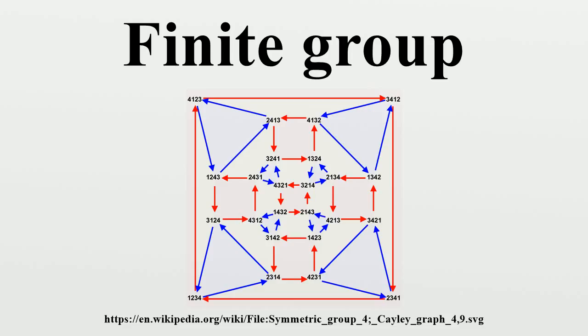Finite abelian groups. An abelian group, also called a commutative group, is a group in which the result of applying the group operation to two group elements does not depend on their order. They are named after Niels Henrik Abel.